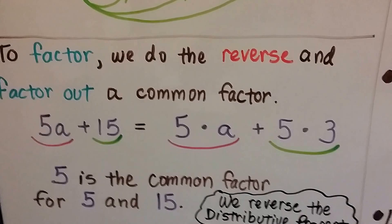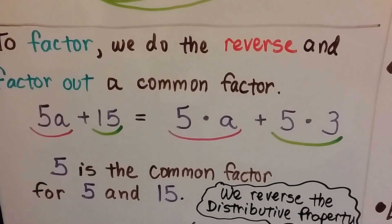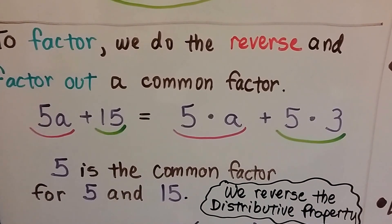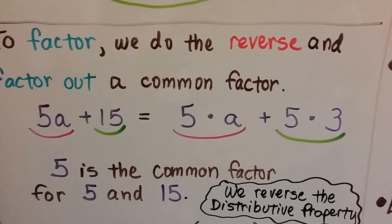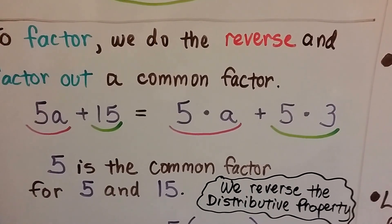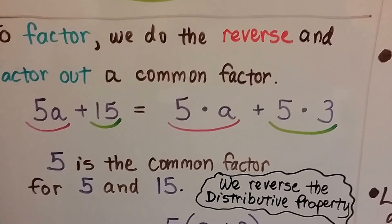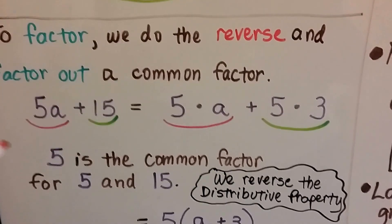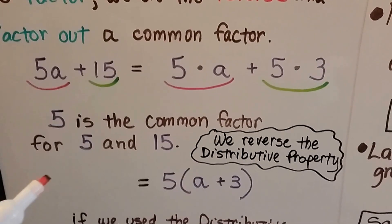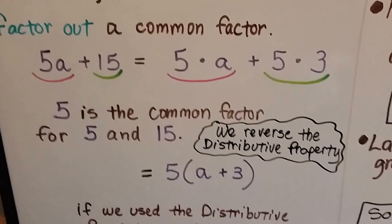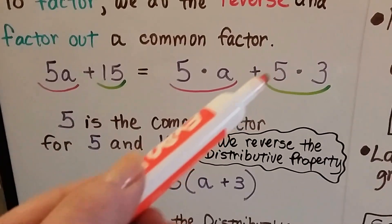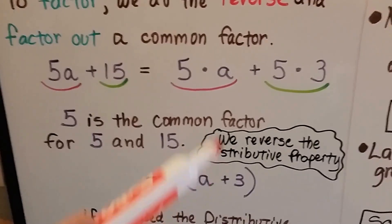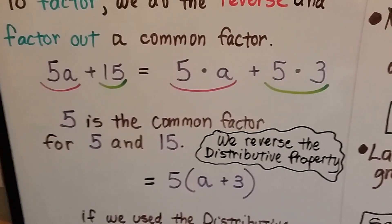In 5a plus 15, we ask ourselves what do 5 and 15 have in common as factors? 5 times 1 is 5, and 5 times 3 is 15. So we can use the 5 as our common factor. 5 times a is 5a, and 5 times 3 is 15, so that would be the 5a plus 15. 5 is the common factor for 5 and 15. We reverse the distributive property and put them as one 5 in front of the parentheses, and then we use the a plus 3 inside parentheses.